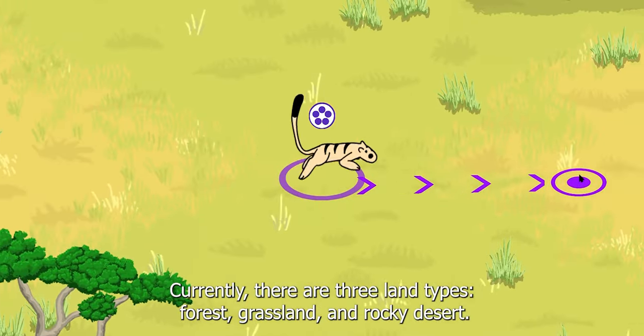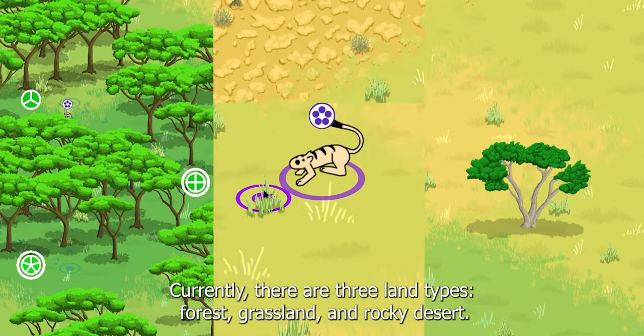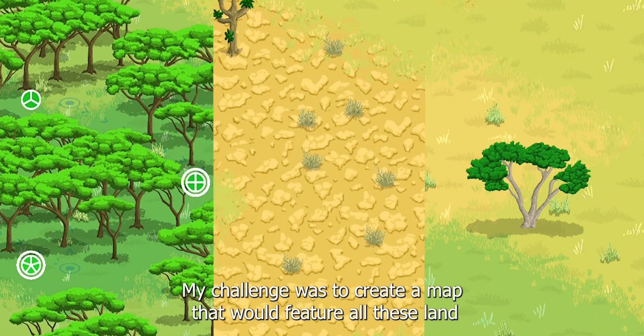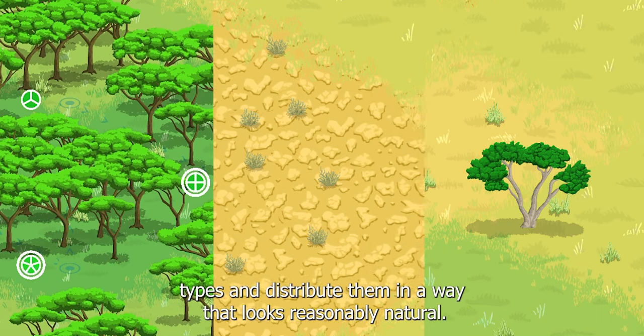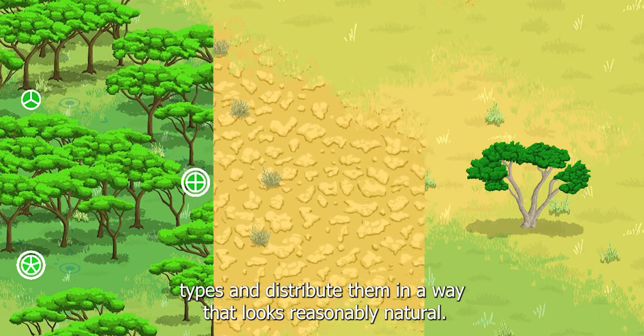Currently there are three land types: forest, grassland, and rocky desert. My challenge was to create a map that would feature all these land types and distribute them in a way that looks reasonably natural.